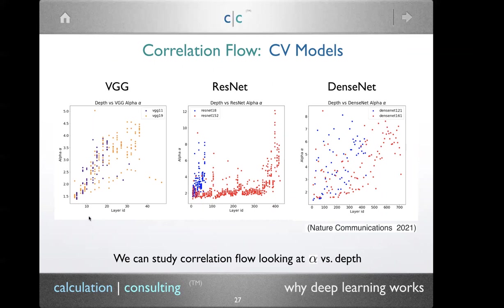You can also look at how α depends on depth, moving layer by layer through the network. For pre-trained models: in architectures like VGG, αs start small near the data and grow larger near the labels. In ResNet, which has residual connections, αs are consistently around two throughout, jumping only at the end. In DenseNet, where every layer is connected to every other, αs are all over the place. This suggests α is a measure of correlation — the information each layer learns from the data — and residual connections facilitate information transfer across layers.